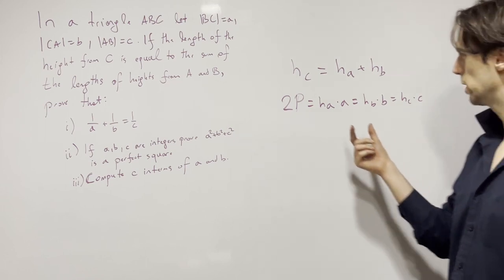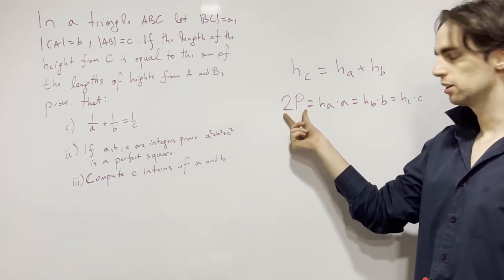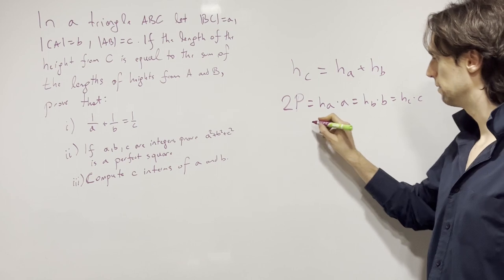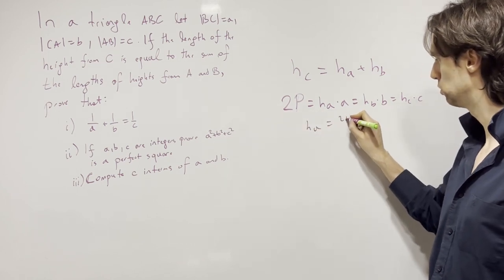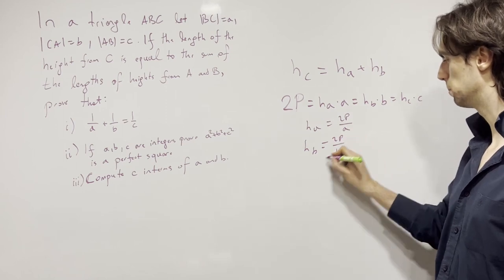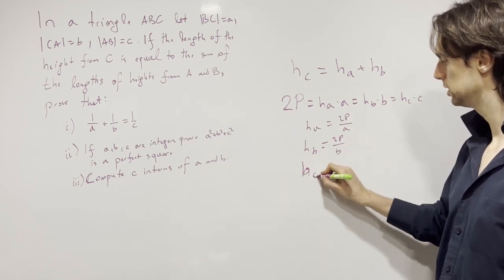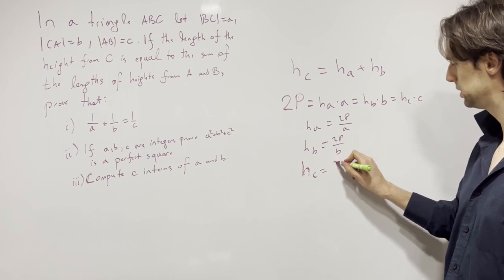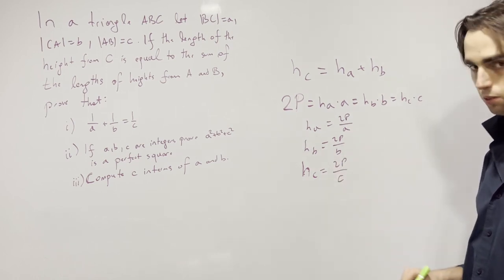So now I can write h_A in terms of the area over A. So I have h_A is equals two times the area over A, h_B is equal to two times the area over B, h_C is equal to two times the area over C.